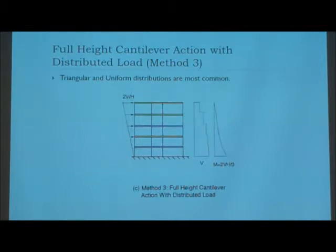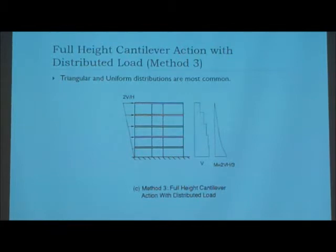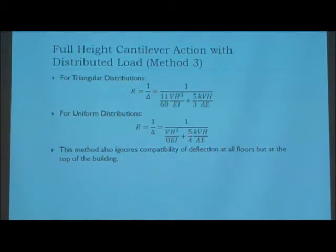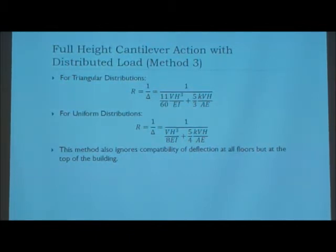Method 3 is still used as a cantilever. The main difference is that you use a distributed load. There are two types of common distributed load: uniform and triangular. Triangular is shown here because that's what you'd see for wind force — lesser at the bottom, greater at the top — and your shear and moment diagrams follow from that. If you have a triangular distribution, such as wind load, you use that equation. If you have a uniform distribution — maybe something pushing against the wall — you use the other equation. The difference between the two calculations is mainly just the coefficients. This method also ignores deflection at all floors except at the top of the building.